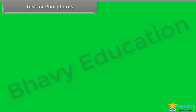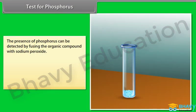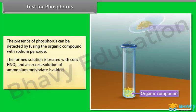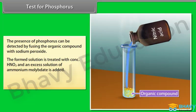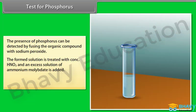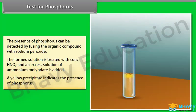Test for phosphorus: The presence of phosphorus can be detected by fusing the organic compound with sodium peroxide. The formed solution is treated with concentrated HNO₃, and an excess solution of ammonium molybdate is added. A yellow precipitate indicates the presence of phosphorus.